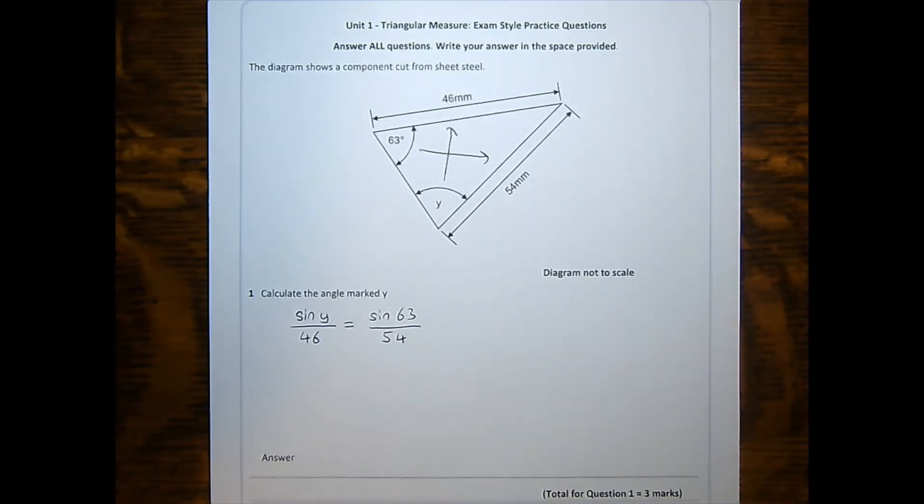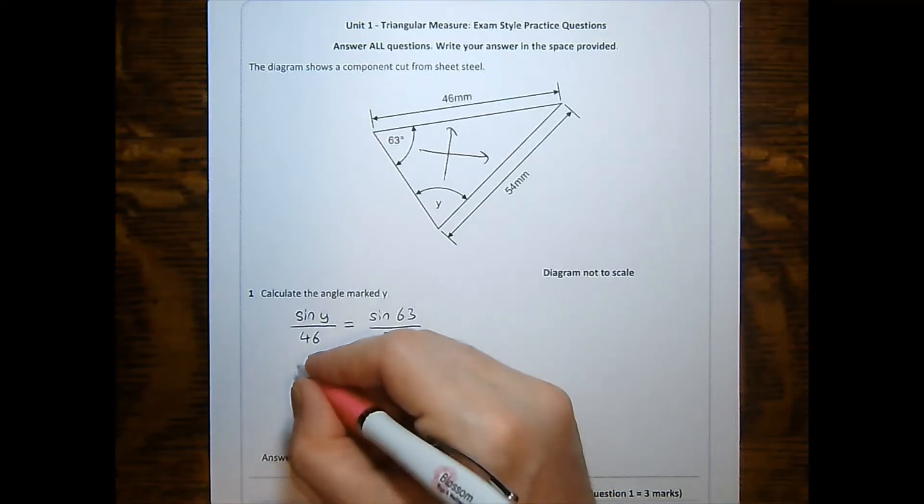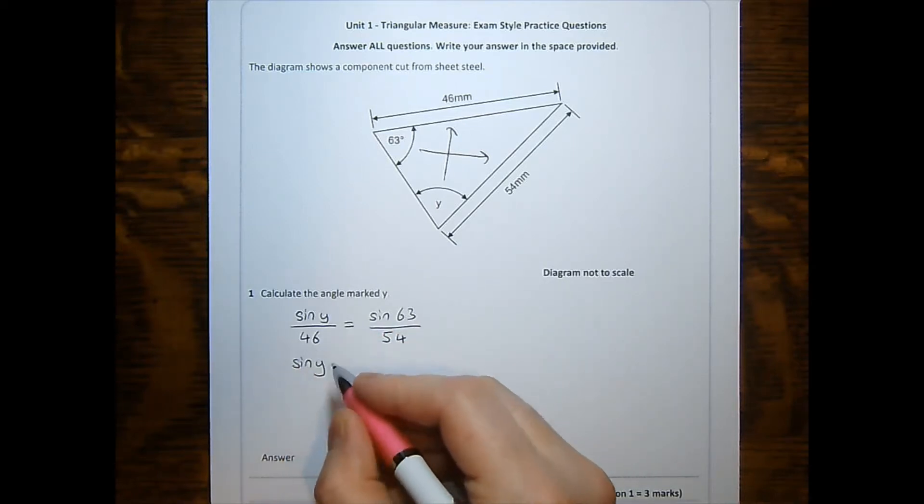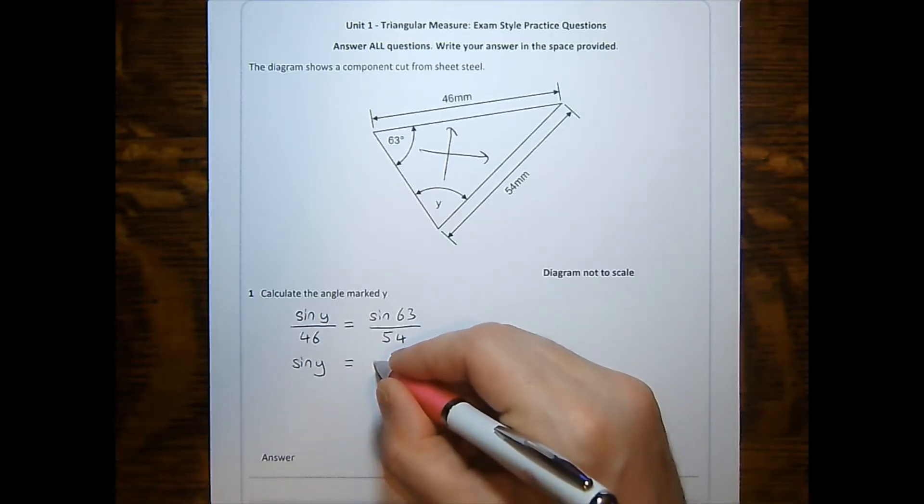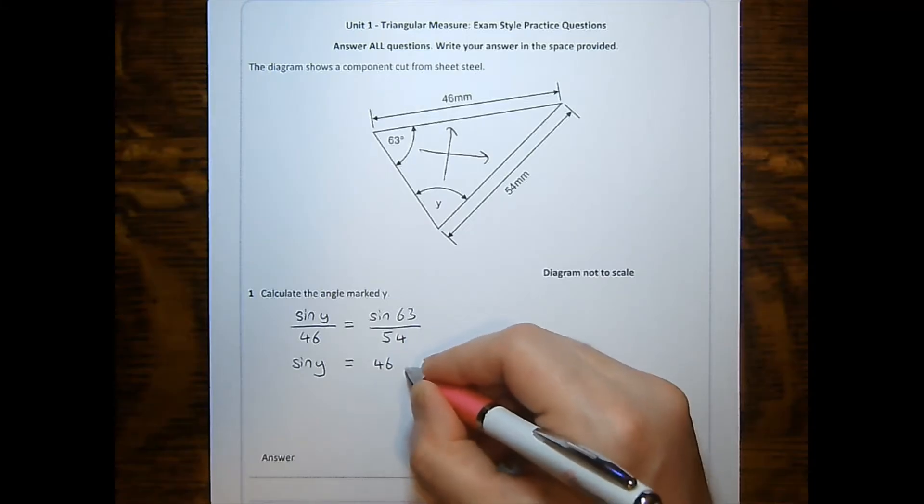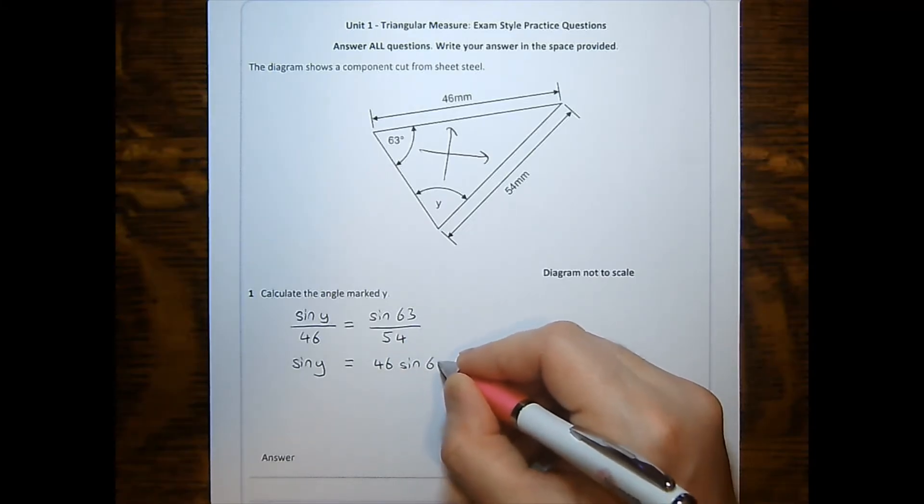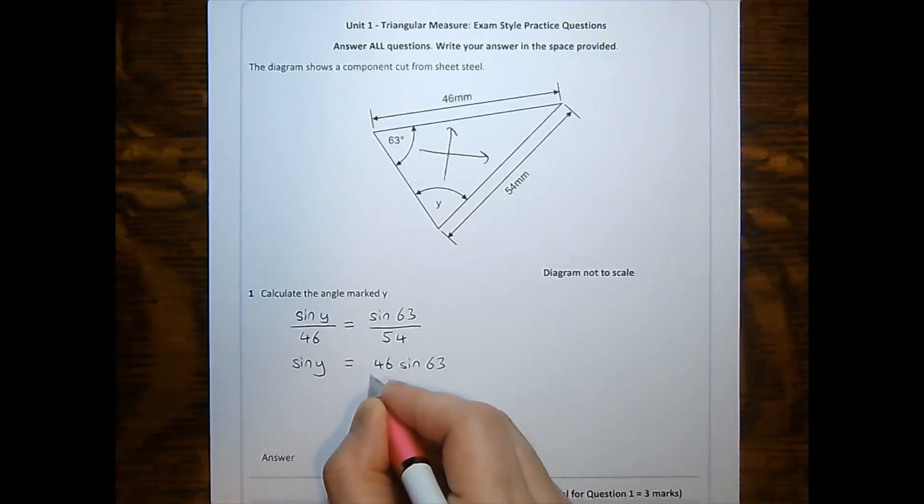The next thing we need to do is rearrange. There are two steps to this. The first step is that I wish to multiply both sides by 46. The left will no longer be divided by 46, and the right will be multiplied by 46. Specifically, I'll multiply the numerator, sine 63 degrees, by 46.